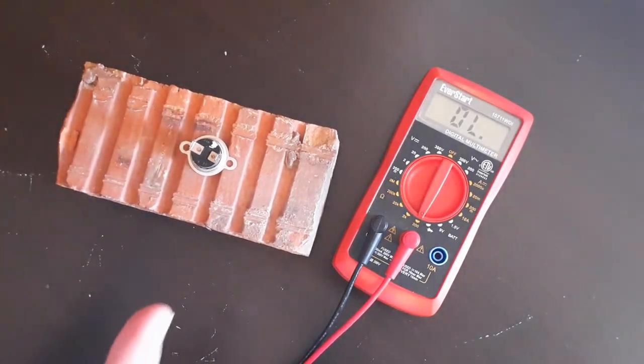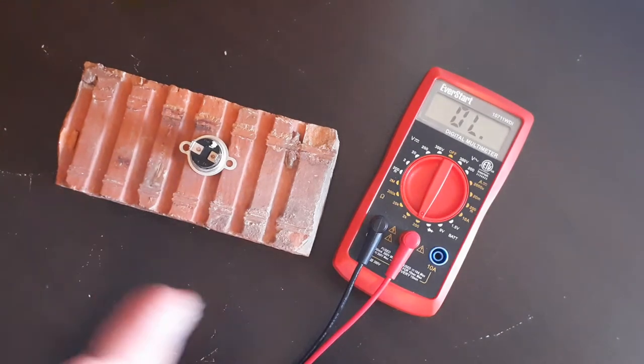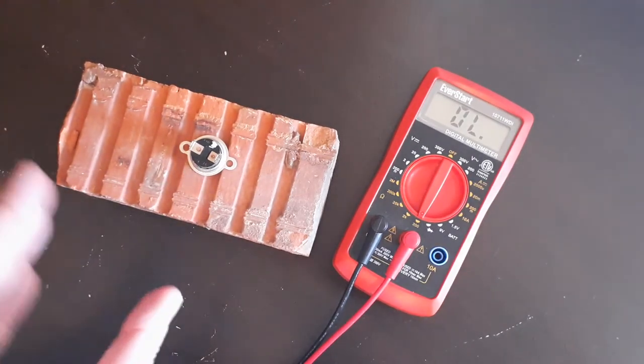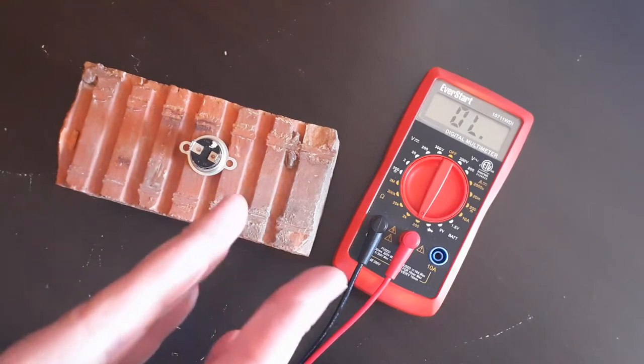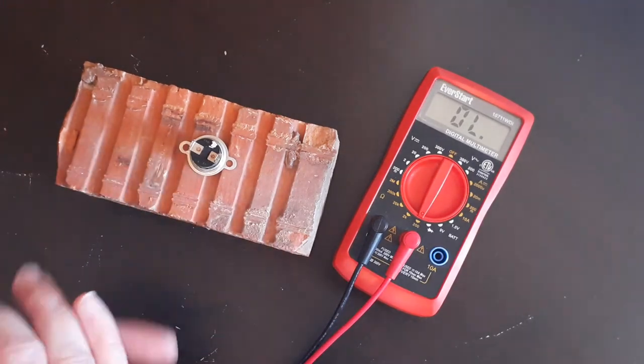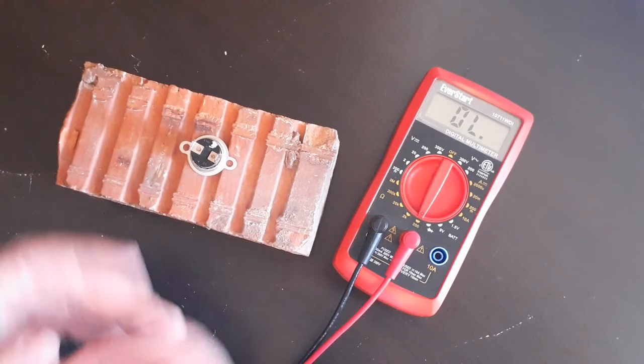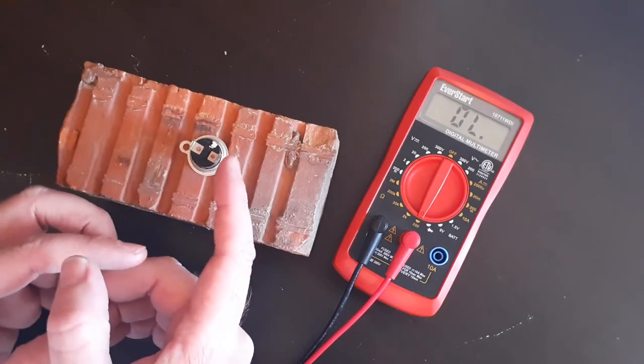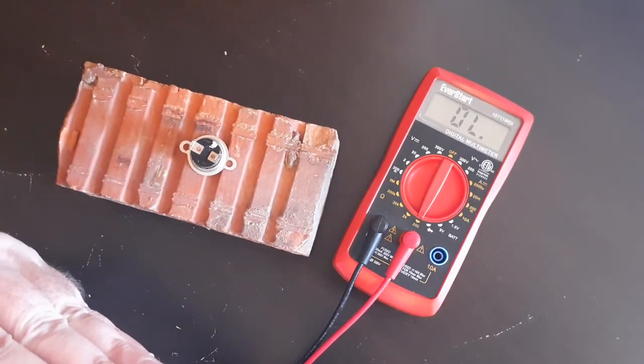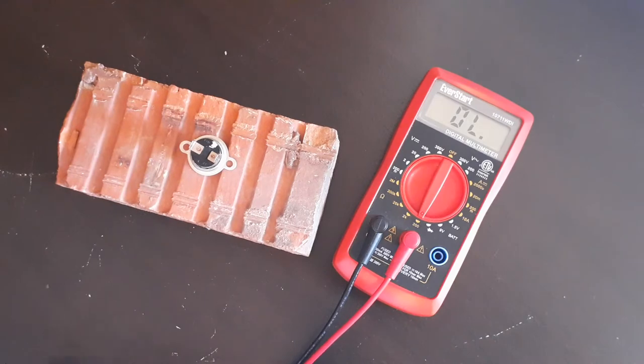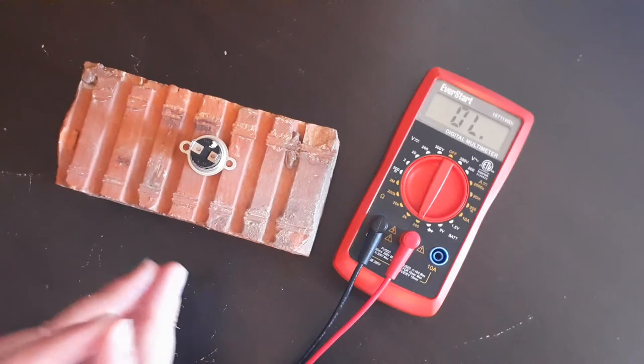When you initially test a thermostat before heating it up, when you initially touch the leads of your multimeter to the thermostat and it changes from OL to any number—even if it's 0.00—that means the lines inside are closed and they are touching each other and providing some kind of reading from one side to the other. Means they're closed.